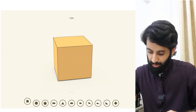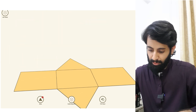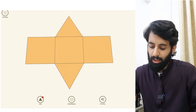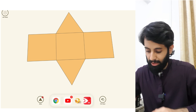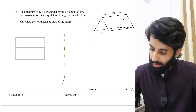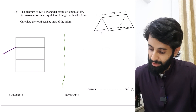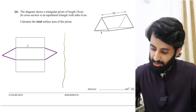Opening up a triangular prism (using a visualization app) confirms it consists of three rectangles and two triangles. Since the cross-section is an equilateral triangle, all three side rectangles are identical. Each rectangle has length 24 cm and width 8 cm (the side of the equilateral triangle).